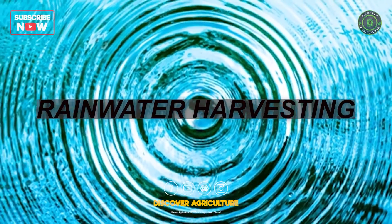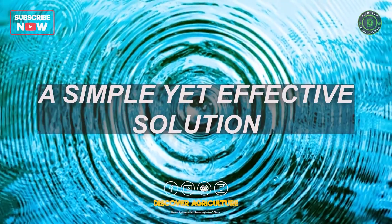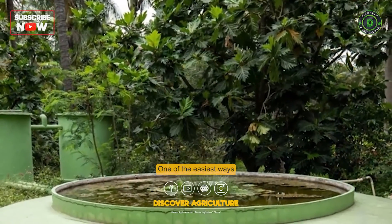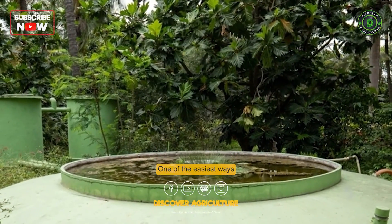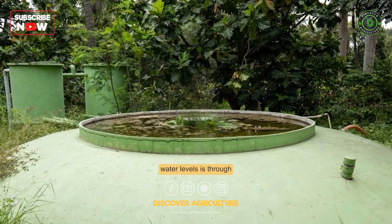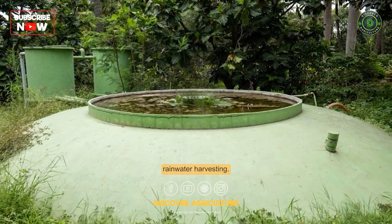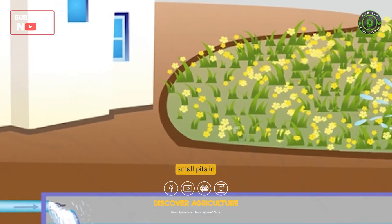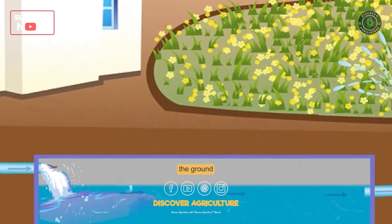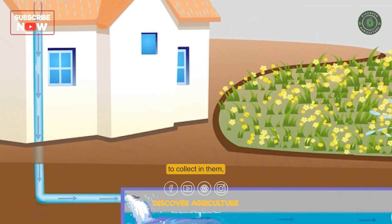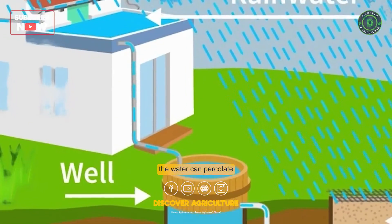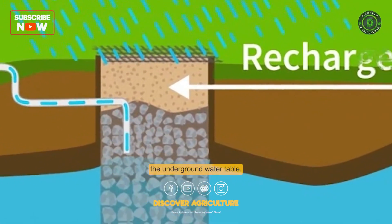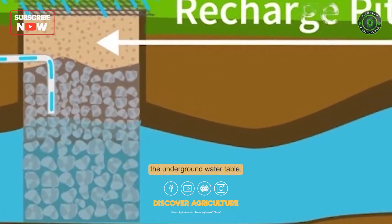Rainwater harvesting – a simple yet effective solution. One of the easiest ways to increase underground water levels is through rainwater harvesting. By digging small pits in the ground and allowing rainwater to collect in them, the water can percolate into the ground and replenish the underground water table.